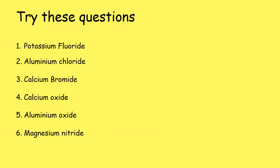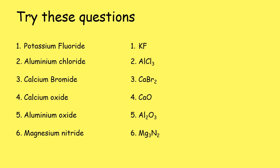Here are six examples for you to try. Pause the video and have a go — you will need access to the data booklet. The answers are: potassium fluoride is KF; aluminium chloride is AlCl₃; calcium bromide is CaBr₂; calcium oxide is CaO; aluminium oxide is Al₂O₃; and magnesium nitride is Mg₃N₂. So that has been our initial look at writing chemical formula — examples with prefix clues in the name and an introduction to the SVSDF method, which we will be expanding upon in our next lesson.